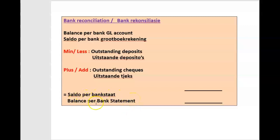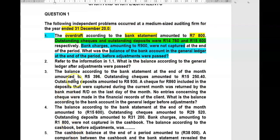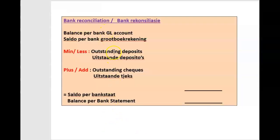Simultaneously, if we start with our balance as per the bank statement and work backwards: outstanding checks that still need to be presented to the bank for payment will reduce our bank statement balance, so we deduct them. A deposit will increase our bank statement balance, so we add outstanding deposits, and that gives us the final balance per GL account. Here they want the GL balance, so we follow this route in reverse.